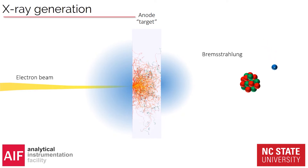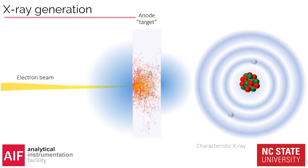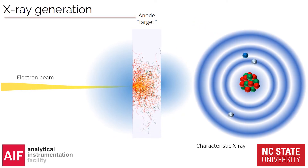Bremsstrahlung is basically when an electron is deflected a bit as it approaches an atom and changes slightly in energy — that difference in energy is converted into a photon and sent away. This creates a spectrum going all the way from basically zero to the highest energy the incident electrons have, creating an X-ray spectrum. We also get characteristic X-rays, where an electron knocks an existing electron out of its orbital in an atom, another electron takes that place, and the difference between those orbitals is the energy of a photon emitted from the atom.